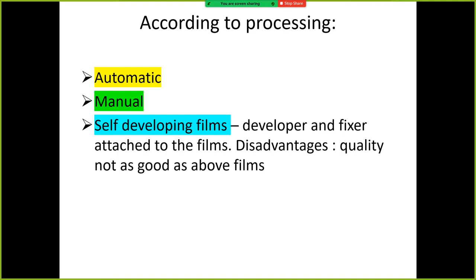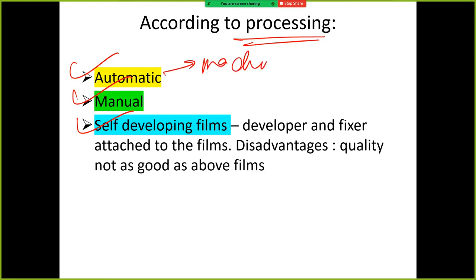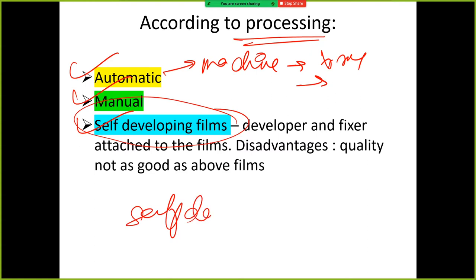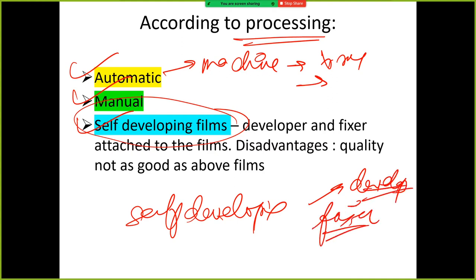According to processing — how do we process x-rays? There are three types: automatic, manual, and self-developing. In automatic, we use a machine where we insert the x-ray and it comes out processed. Manual is what we do in our colleges — we open it, add developer, add fixer, wash with water. And then there are self-developing films where the film contains the developer and fixer together.